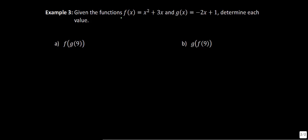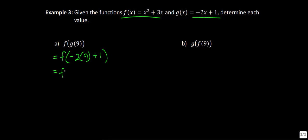We have two functions: f of x equals x squared plus 3x, and g of x equals negative 2x plus 1. For f of g of 9, we start by substituting 9 into g. So we have negative 2 times 9 plus 1, which simplifies to negative 18 plus 1, giving us f of negative 17.